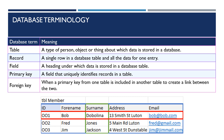A primary key is a field that can uniquely identify a record in the table. If we look at our example member table, we can see that forename, surname and address would not work as a primary key because two different members could have the same forename, the same surname or live at the same address. However, ID and email would both be unique. It's more likely in this case that ID would become the primary key.